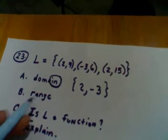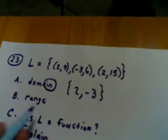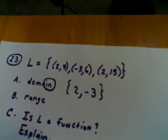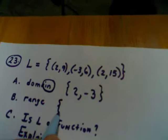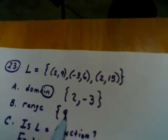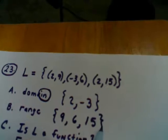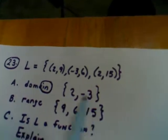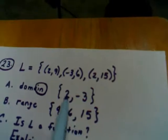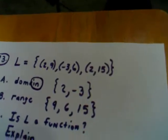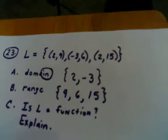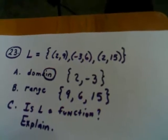The range is the set of outputs, which is also the set of Y values in this case, and that would be the set made up of 9, 6, and 15. One thing I want to point out to you in the answer to part A and part B, the order in which you put these does not matter because in a set, order doesn't matter.